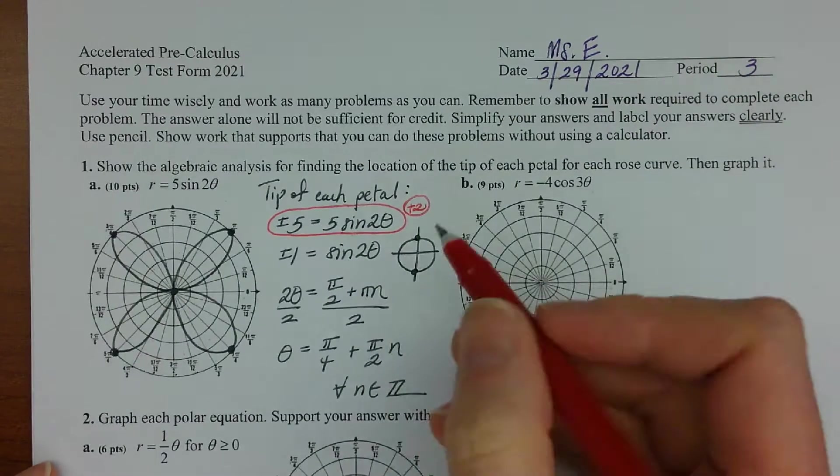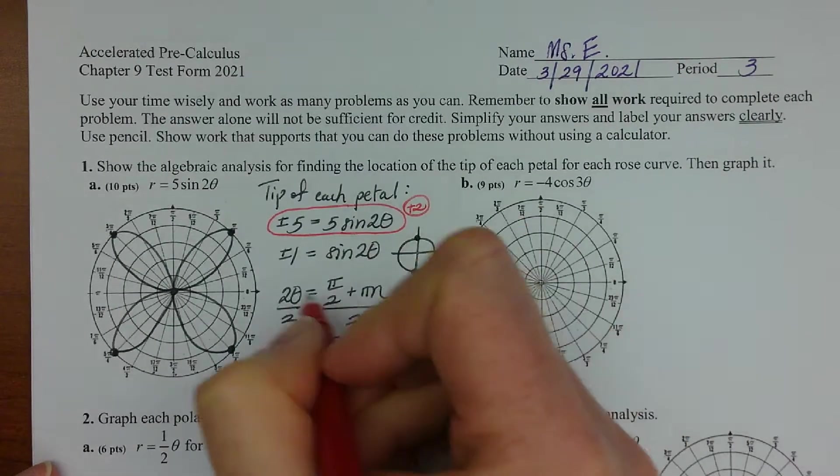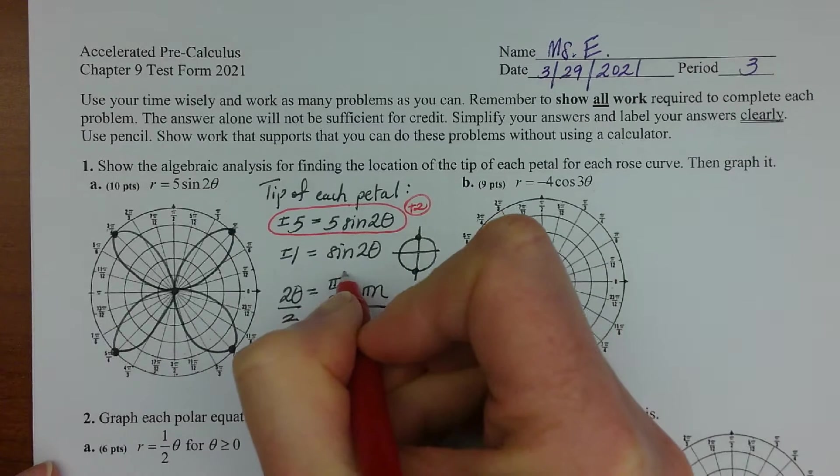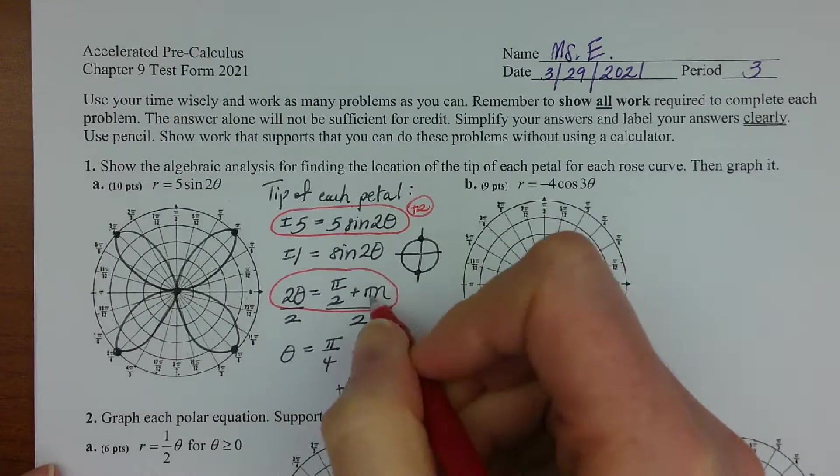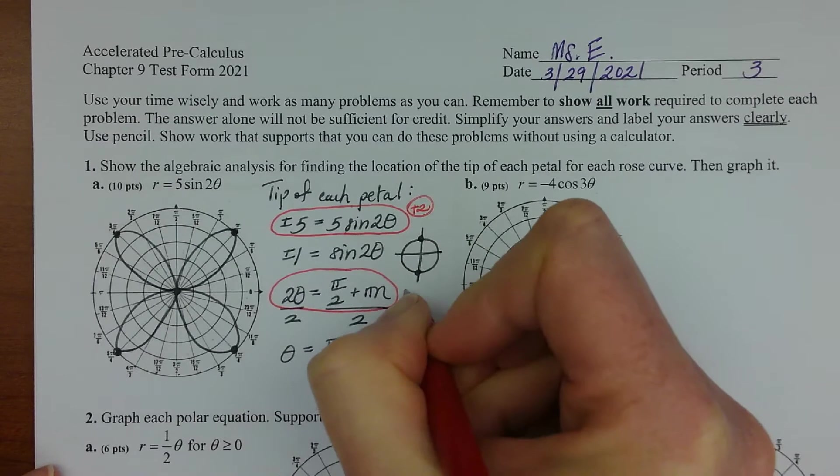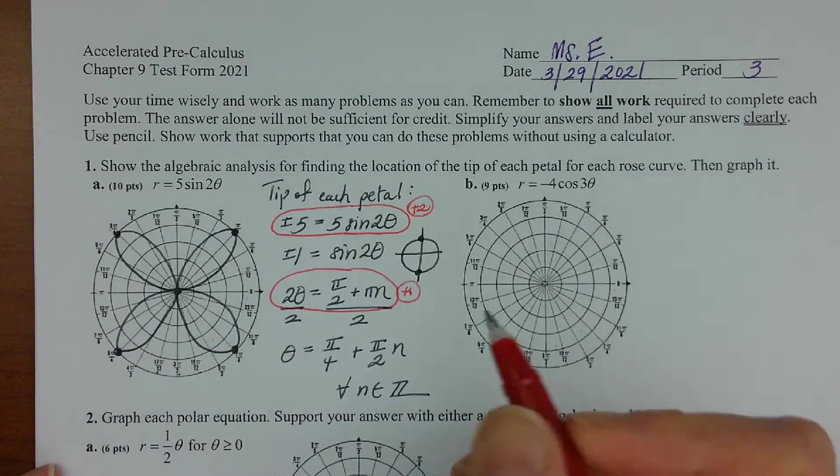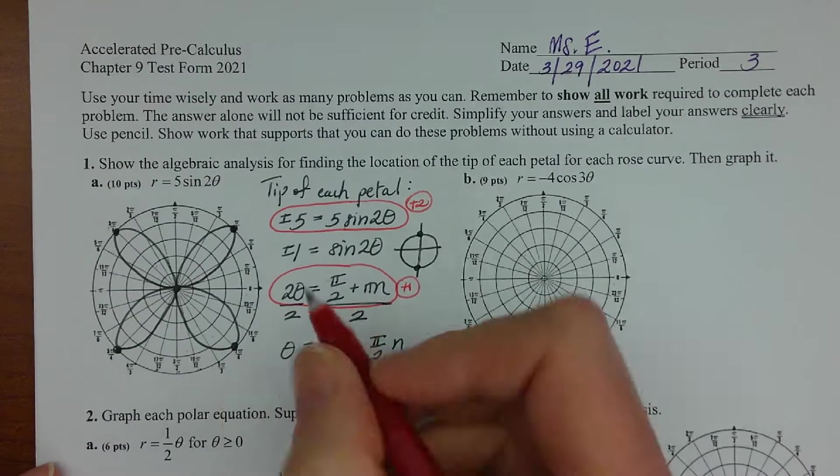The next thing I'm looking for is for you to have two theta set equal to pi over two plus pi n. Let's see, wait for that...